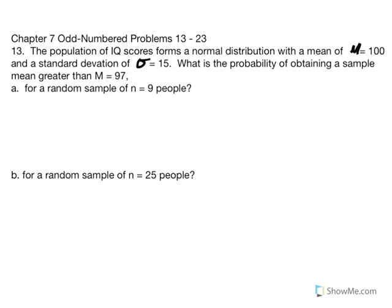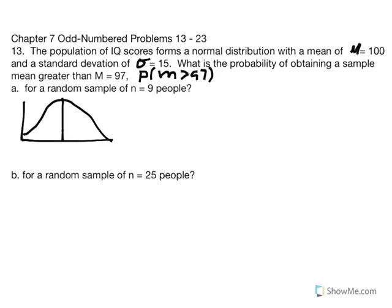What is the probability of obtaining a sample mean greater than 97? Our probability statement is: the probability of obtaining a sample mean that is greater than 97. We're going to sketch our distribution and solve for standard error. The mean in the center is 100, and a sample mean of 97 would be to the left of the distribution mean.